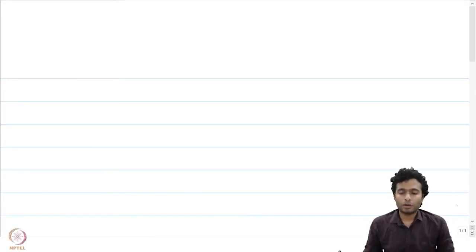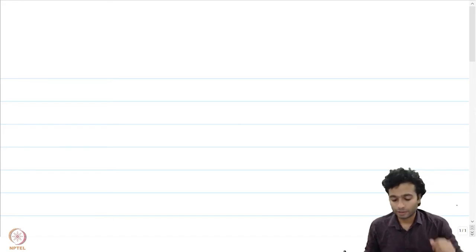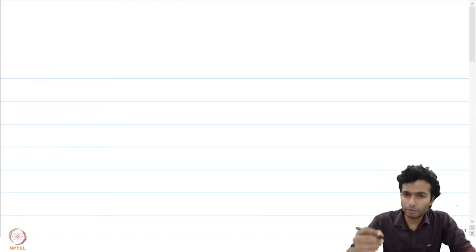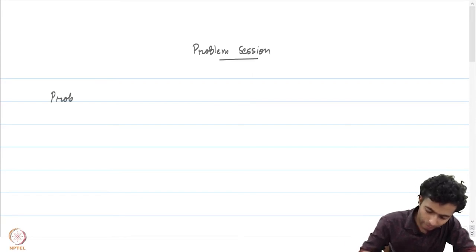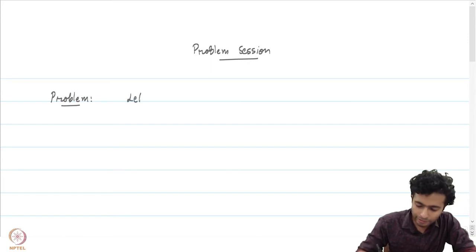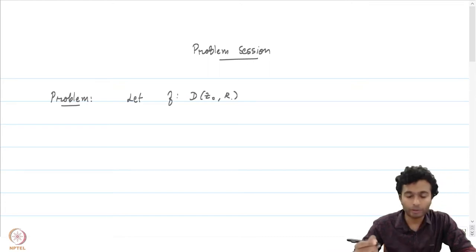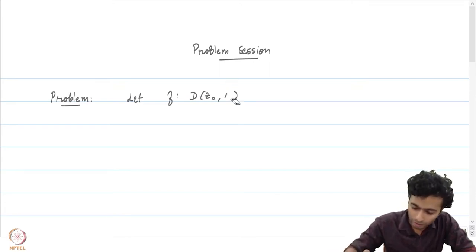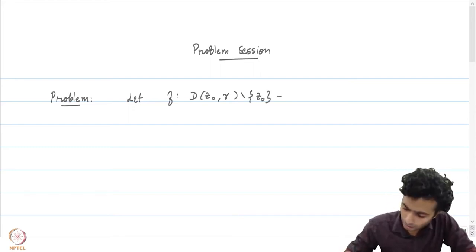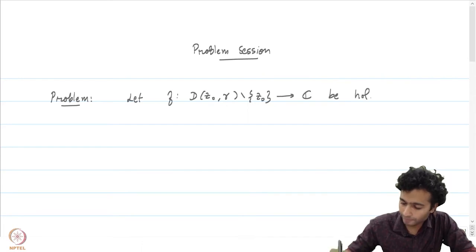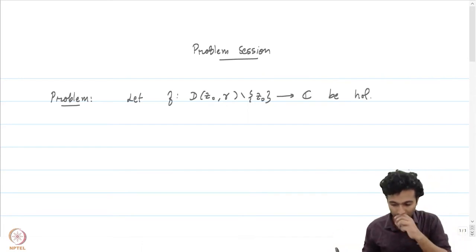Let us now solve a few problems on the singularities of a holomorphic function. The first problem is on removable singularities. Let f be a function which is holomorphic on a punctured neighbourhood of point z₀, removing the point z₀. Basically, z₀ is an isolated singularity.